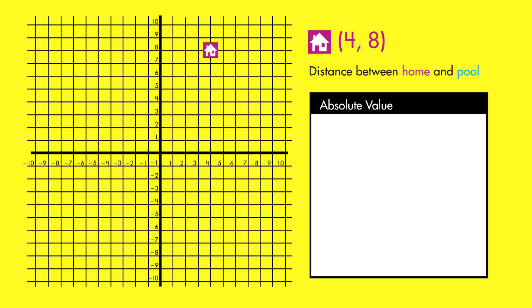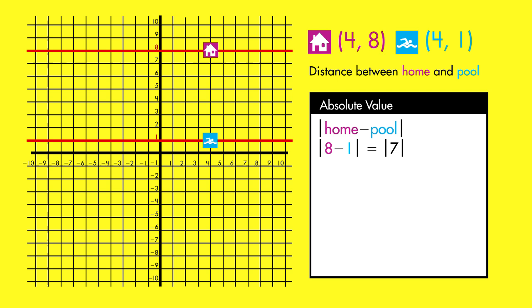Now, let's look at the distance between home and the pool. These two locations have the same x-coordinate, so we solve using their y-coordinates. We subtract 1 from 8 and find the difference is 7. The absolute value of 7 is 7. Therefore, the distance between home and the pool is 7.